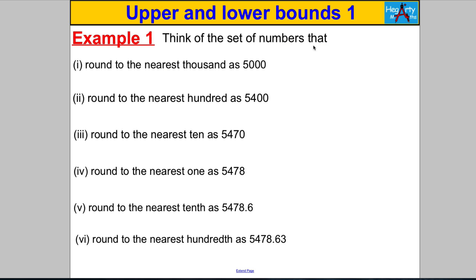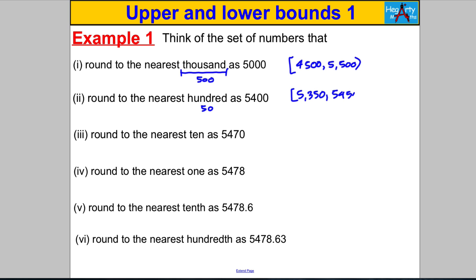Let's apply this technique. For the nearest thousand: half of 1000 is 500, so lower bound is 4500 with a square bracket and upper bound is 5500 with a curly bracket. For the nearest hundred: half of 100 is 50, lower bound is 5350, upper bound is 5450 with curly bracket. For the nearest ten: half of 10 is 5, lower bound is 5465, upper bound is 5475 with curly bracket.